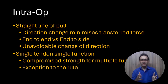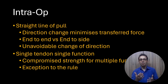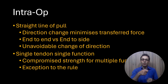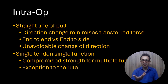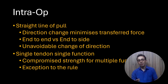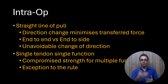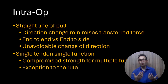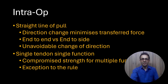Coming to intraoperative principles, a straight line of pull is always advisable because direction change minimizes the transfer force. End-to-end tendon transfer gives a better pull and leverage compared to end-to-side, but end-to-side is preferred when nerve regeneration is anticipated in due course of time. When change of direction is unavoidable, as in opponensplasty for thumb movement, pulleys must be provided to effectively direct the tendon transfer.